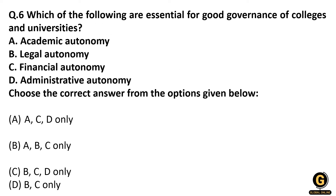The next question is: which of the following are essential for good governance of colleges and universities? The options are academic autonomy, legal autonomy, financial autonomy, and administrative autonomy. Remember: when a university is established under the law of India, it has two councils — the Executive Council, which handles administrative and financial matters, and the Academic Council, which handles academic affairs. Universities do not have legal autonomy. So the correct answer is A, C, and D — academic, financial, and administrative autonomy.